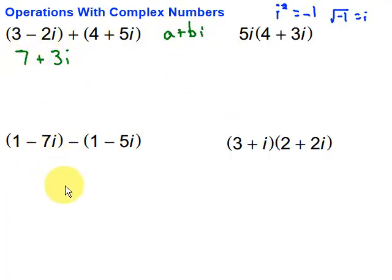How about this one down here? Well, here we're subtracting this, so we have to distribute that negative through to get rid of the parentheses. So it's going to be 1 minus 7i minus 1 plus 5i. And then we just go about combining like terms. So 1 minus 1, well, that's 0, so we don't have a real part in this one. And then we have negative 7i plus 5i is going to be minus 2i.